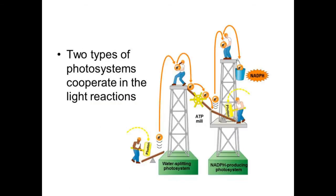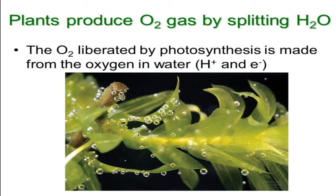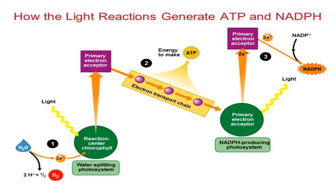This is the diagrammatic representation of how ATP is generated and how electrons flow from the splitting photosystem to NADP, producing photosystem. In non-cyclic photophosphorylation, Photosystem II and Photosystem I are clearly shown, along with the steps that follow in photosynthesis.